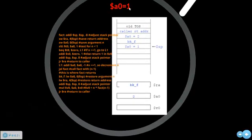Now a0 equals 1. This instruction again creates room in the stack. It stores the new value of RA, which is the address of bk_f, at this address, and stores the new value of a0, which is 1, at this address. Again it compares whether a0 is less than 1 — a0 is 1, so t0 equals 0. Again this branch is taken, and a0, which is 1, is decremented by 1. Now a0 is 0. Again, this jump and link instruction calls the function fact with the new argument a0 equals 0. The return address, the value at RA, is again the address of bk_f.